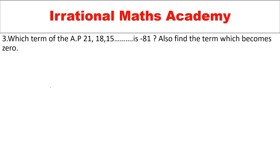Which term of the AP is -81? Also find the term which becomes 0. So let us write down this AP: 21, 18, 15, ... up to -81. The first term a = 21. The common difference d = 18 - 21 = -3.